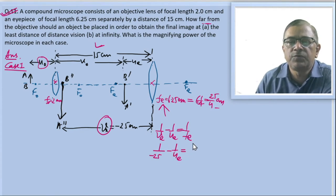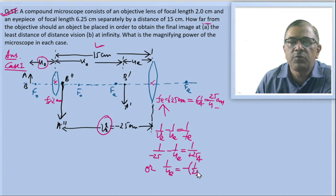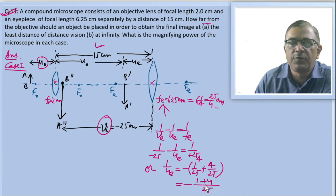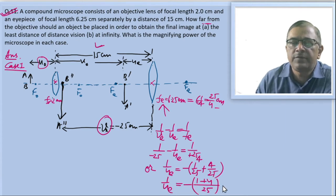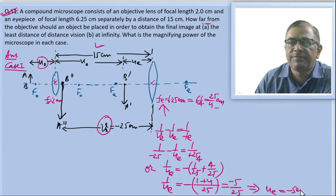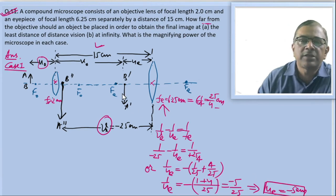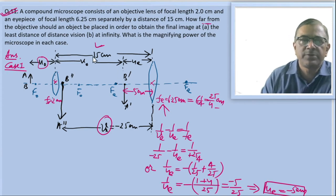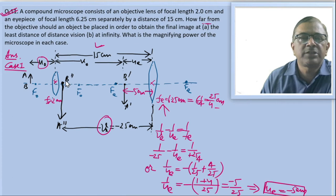Solving: 1 by u_e equals minus 1 by 25 plus 4 by 25. Taking 25 as the common denominator, this gives 1 by u_e equals minus 5 by 25, which implies u_e equals minus 5 centimeter. So the object A-dash B-dash is at a distance of 5 centimeter before the eyepiece. The total distance between the two lenses is 15 centimeter, so v_o equals 15 minus 5, giving v_o equal to plus 10 centimeter.